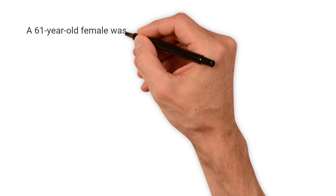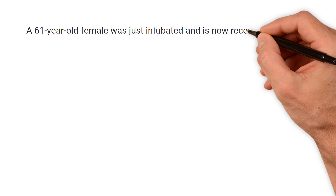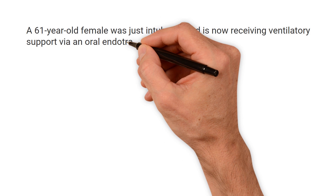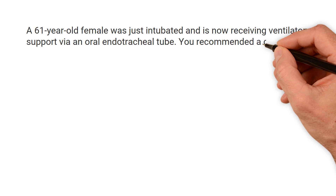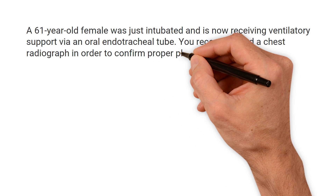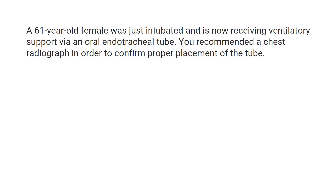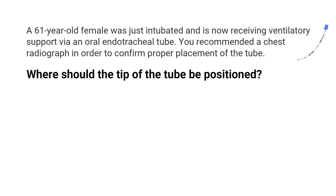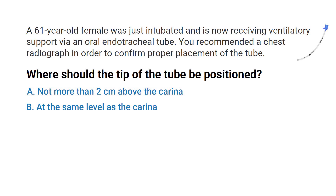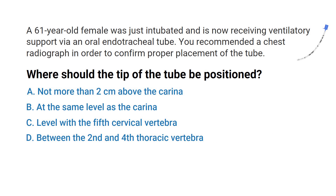A 61-year-old female patient was just intubated and is now receiving ventilatory support via an oral endotracheal tube. You recommended a chest radiograph to confirm proper placement of the tube. Where should the tip of the tube be positioned? A) Not more than two centimeters above the carina, B) at the same level as the carina, C) level with the fifth cervical vertebrae, or D) between the second and fourth thoracic vertebrae.